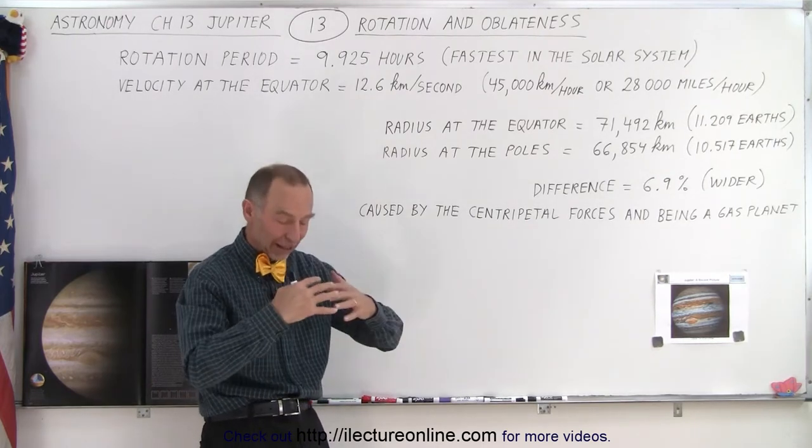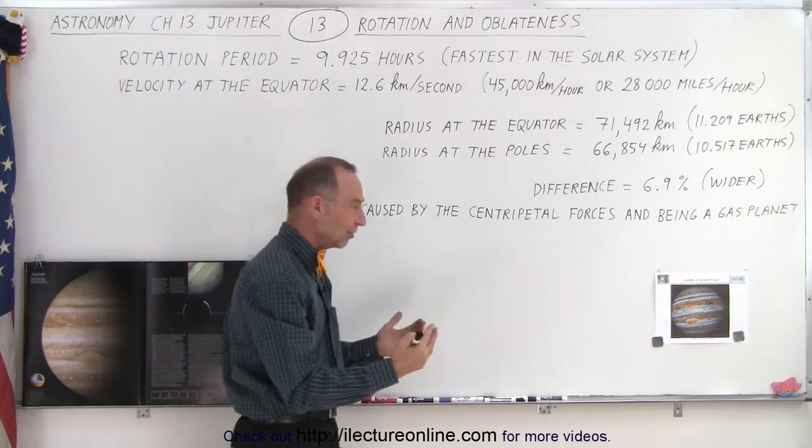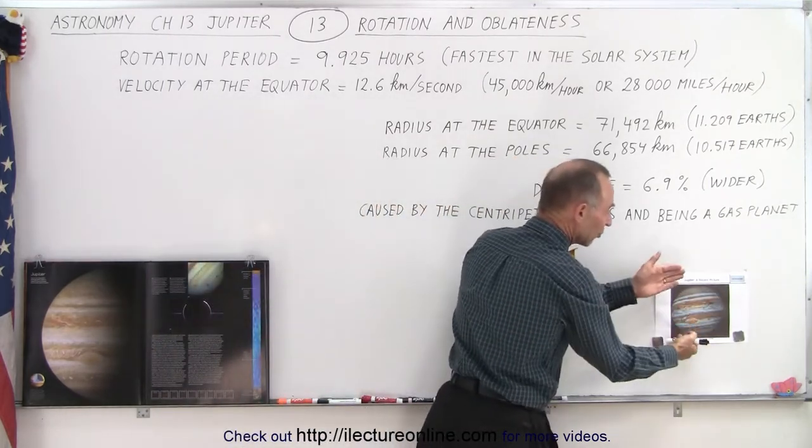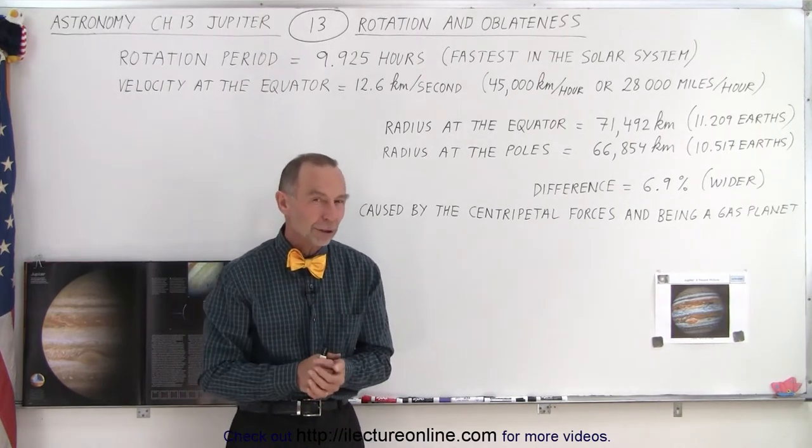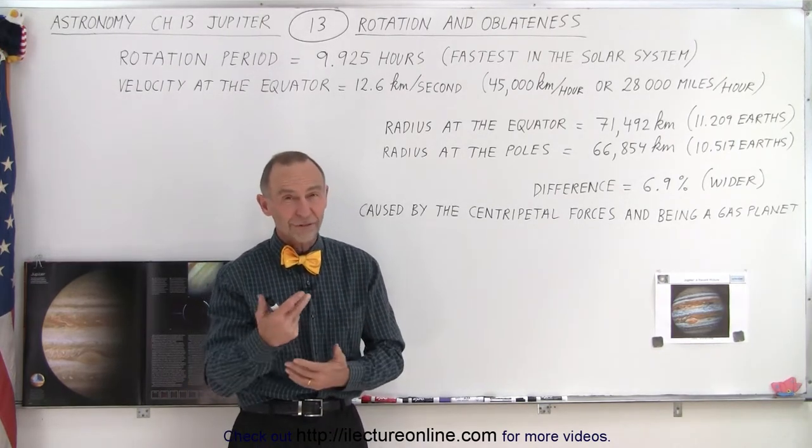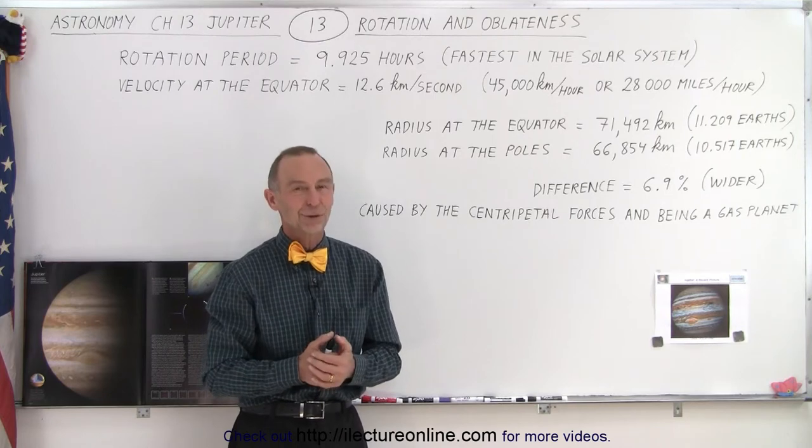And yes, the oblateness of the planet, the shape of the planet, you can see it is much wider than it is tall and you can actually see it. If you look at a picture, it's actually noticeable when you look at it. And that's the result of the fastest rotating planet in the solar system.